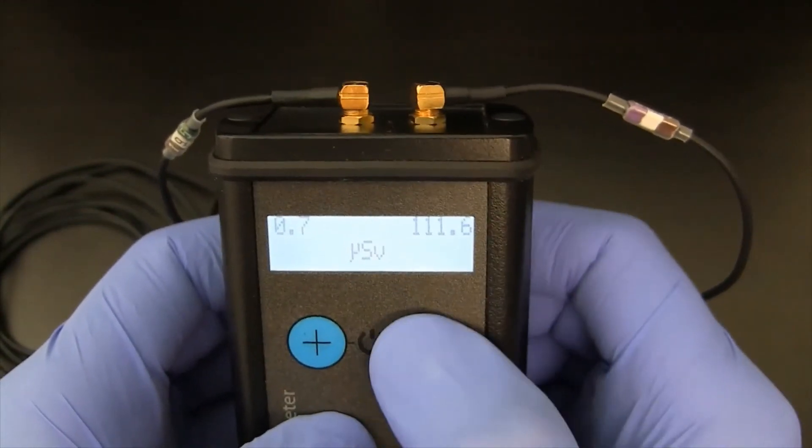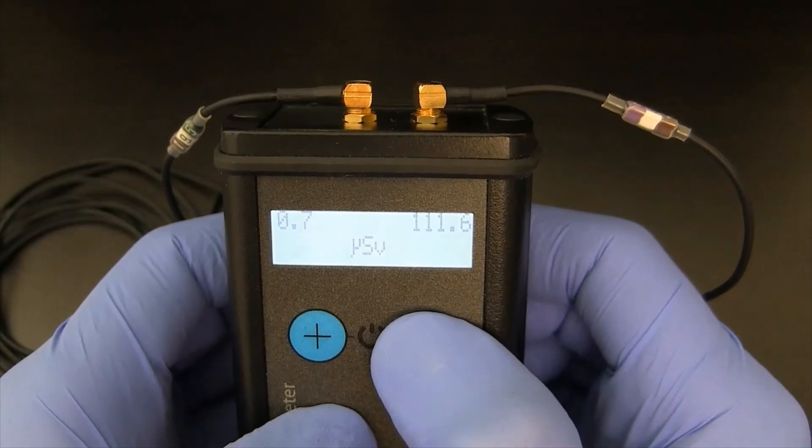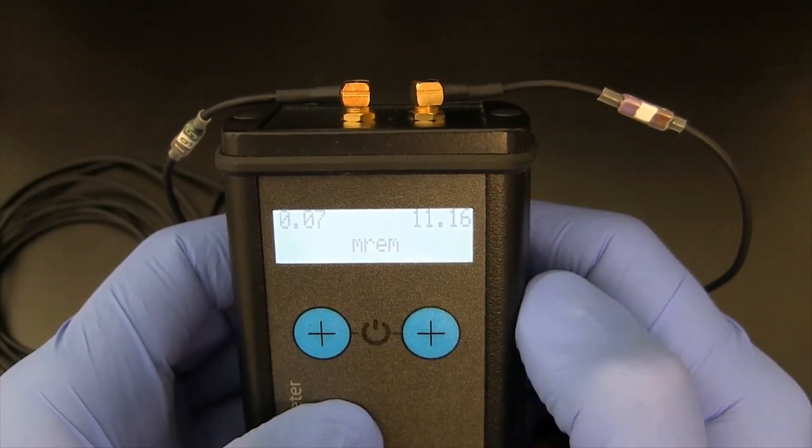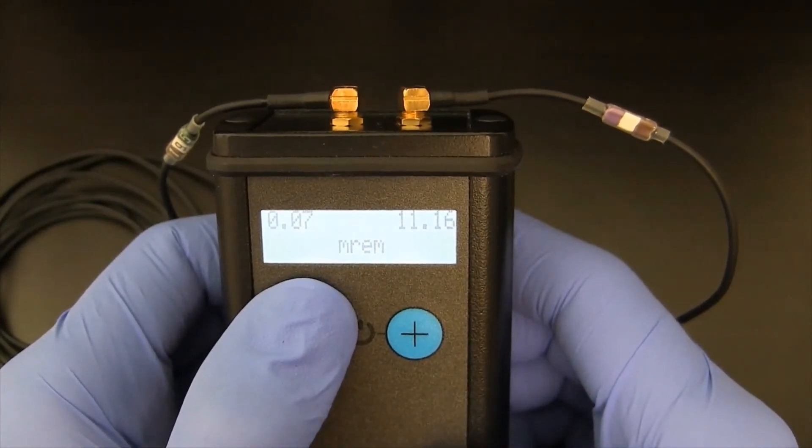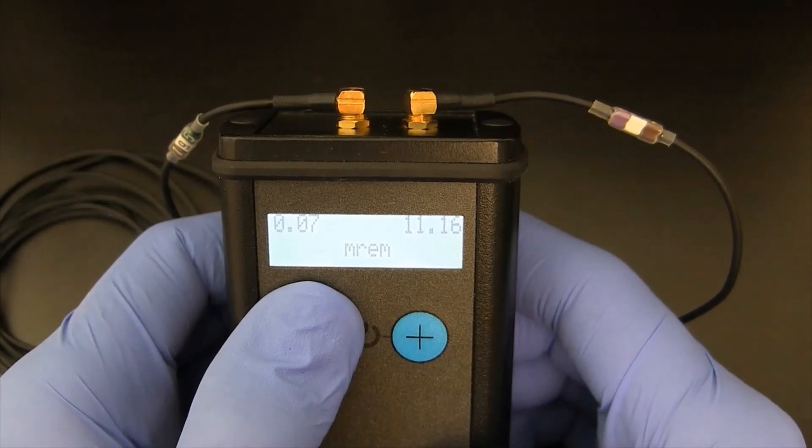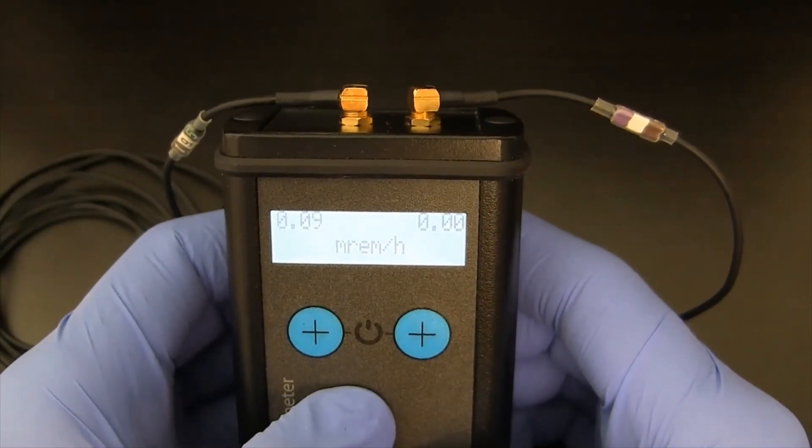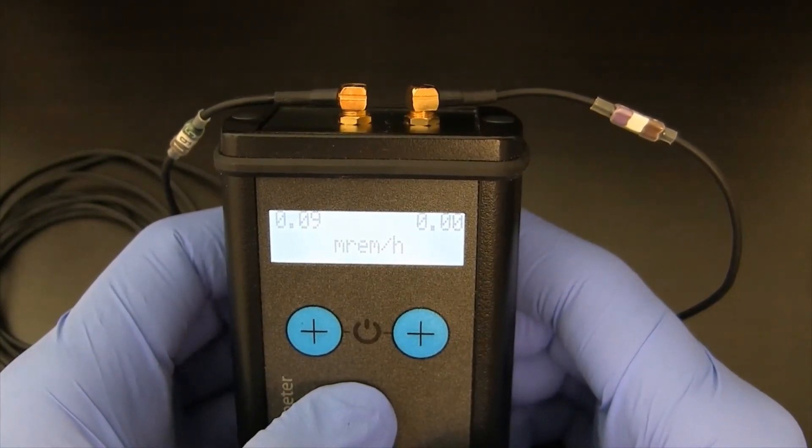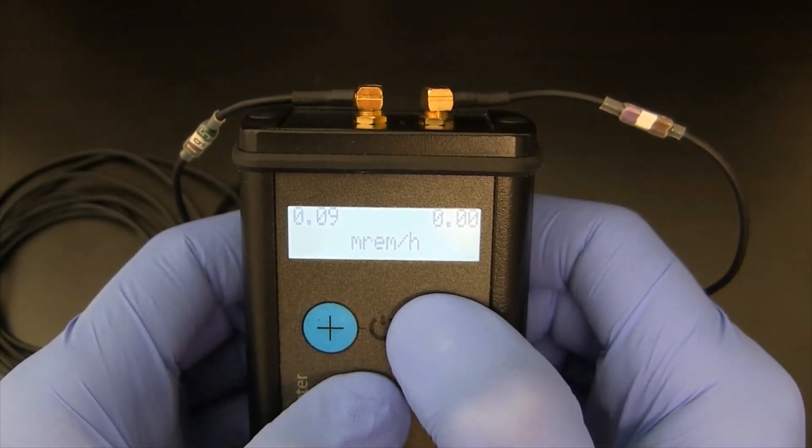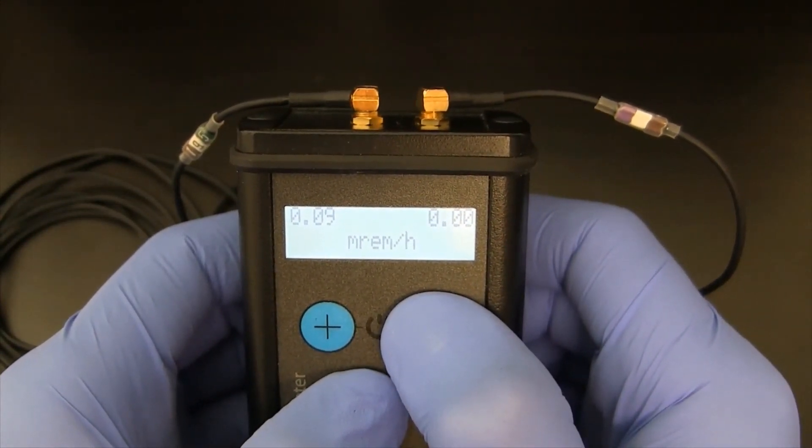If I go and hold the right button down, it'll change from SI units to US units. And the same then with the left button. If I hold down the left button, it'll go from millirem dose to millirem per hour or dose rate. By holding down the right button one more time, I can go back to SI units.